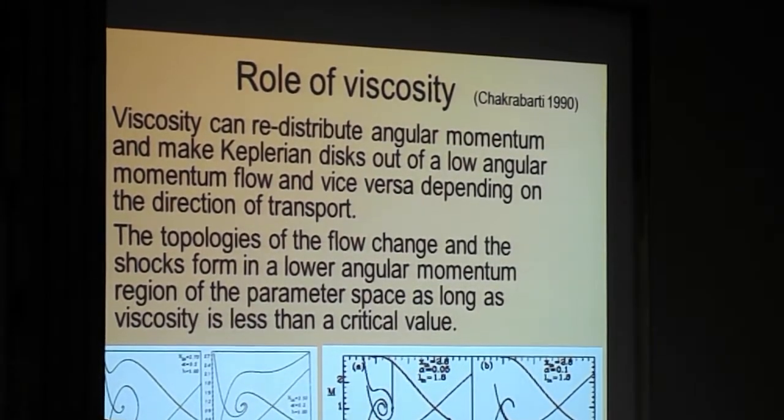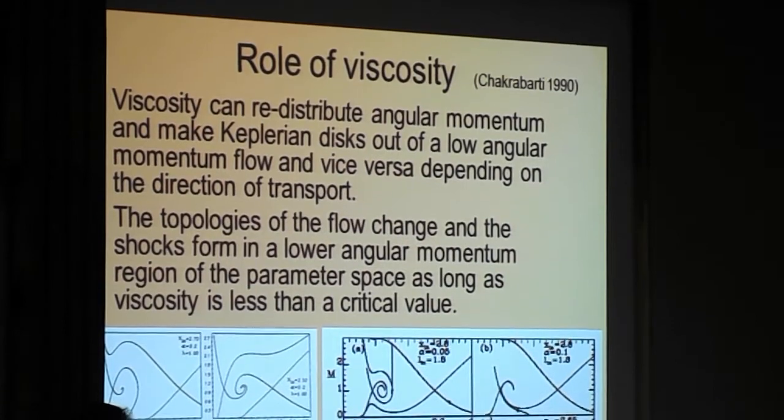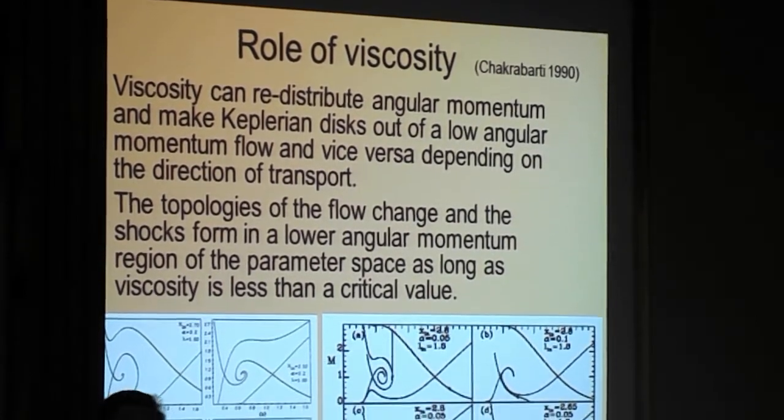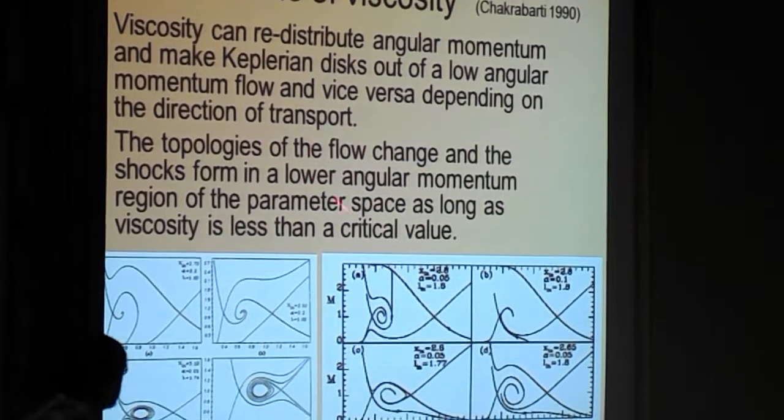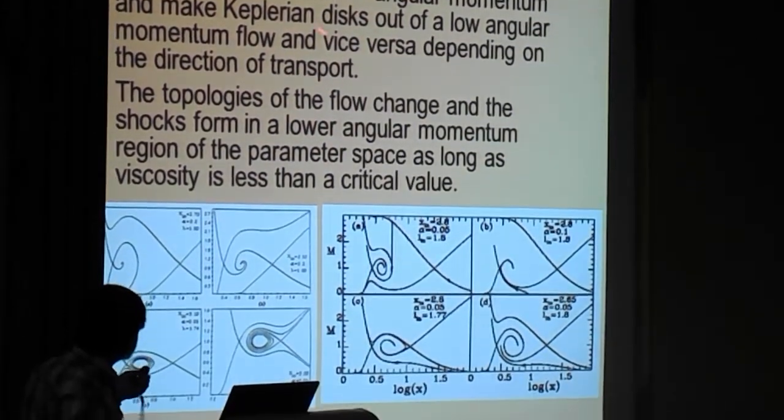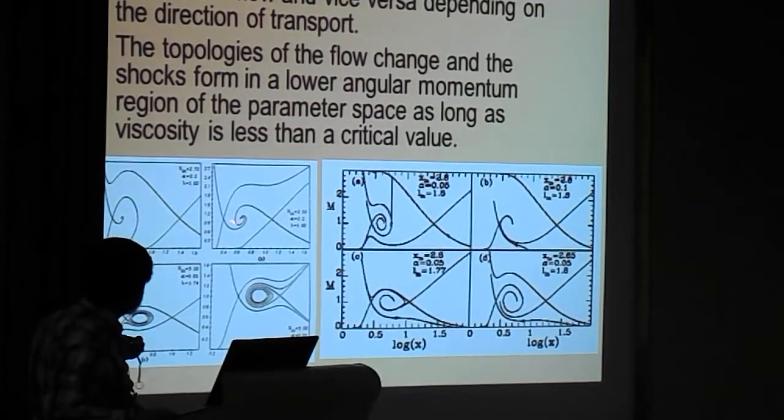Because Keplerian disk, has to be, angular momentum is distributed. So, even if you inject with some angular momentum, that has to be distributed. So, you have to transport the angular momentum. And then, so, you need viscosity. If you add viscosity, the topology of the solutions, change drastically.